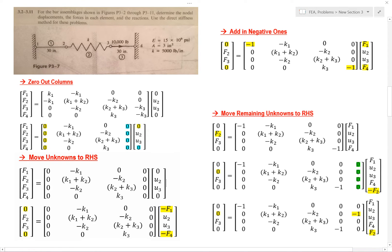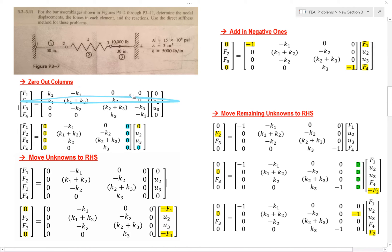Now, one thing I want to point out is whenever you work with force 1, you would do it like this. The first step was here, and it's the same for force 2 — the first step is here. So this 0 is distributed to this entire column. I went ahead and zeroed that out, and the same is true for force 4 — this is associated with this column, and this is associated with this column.